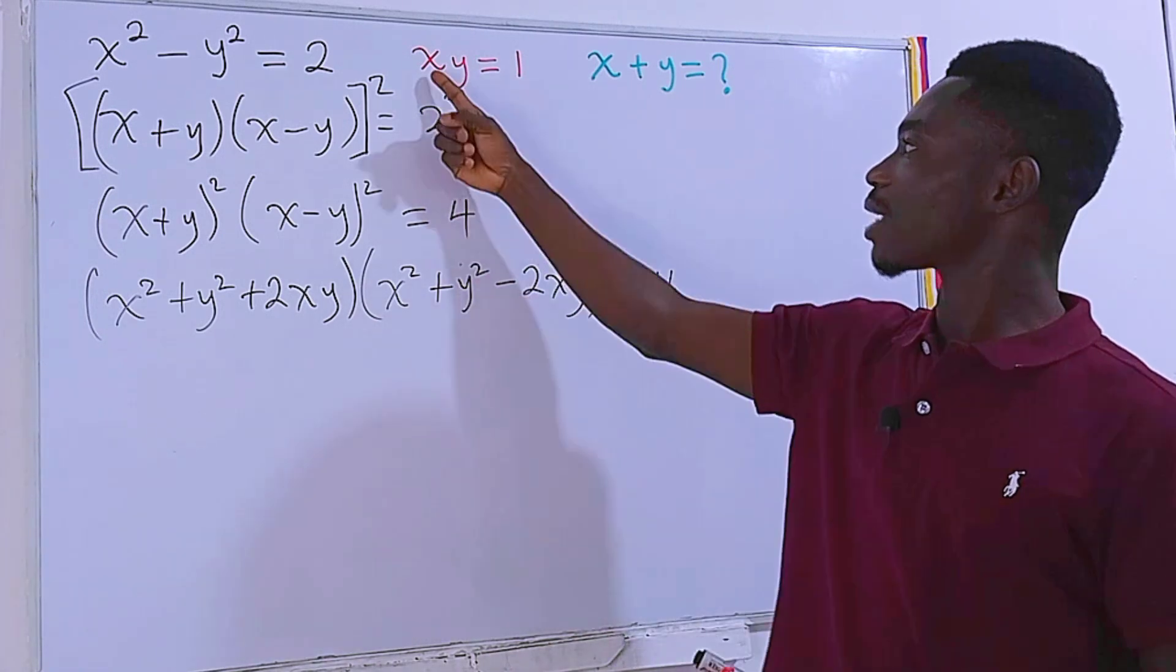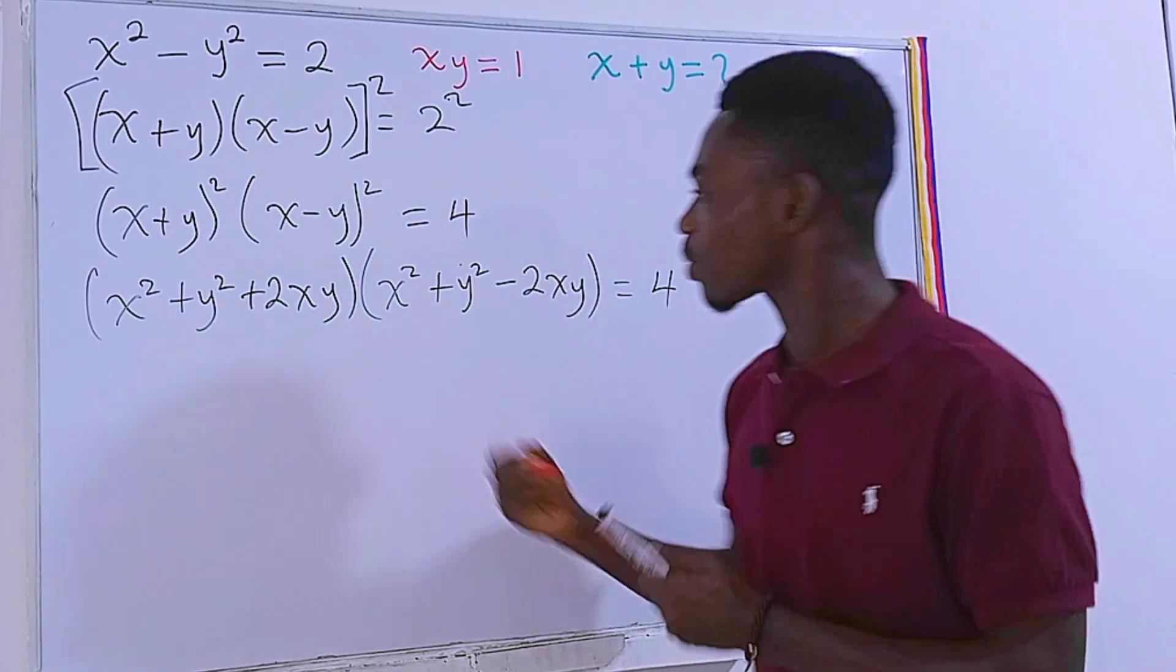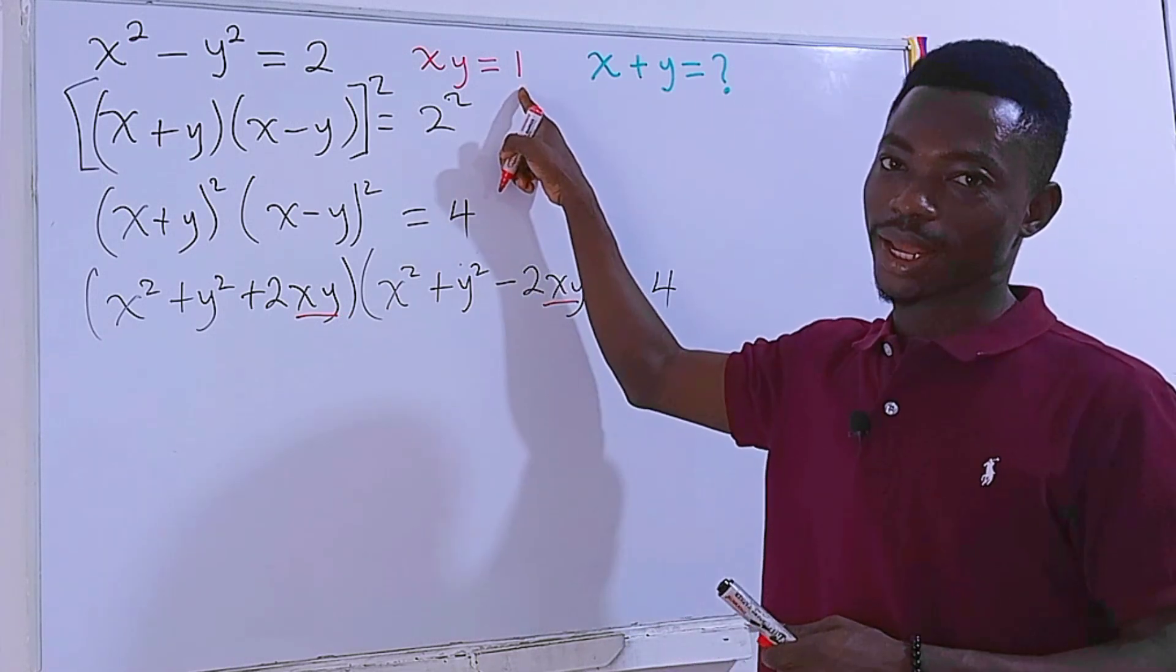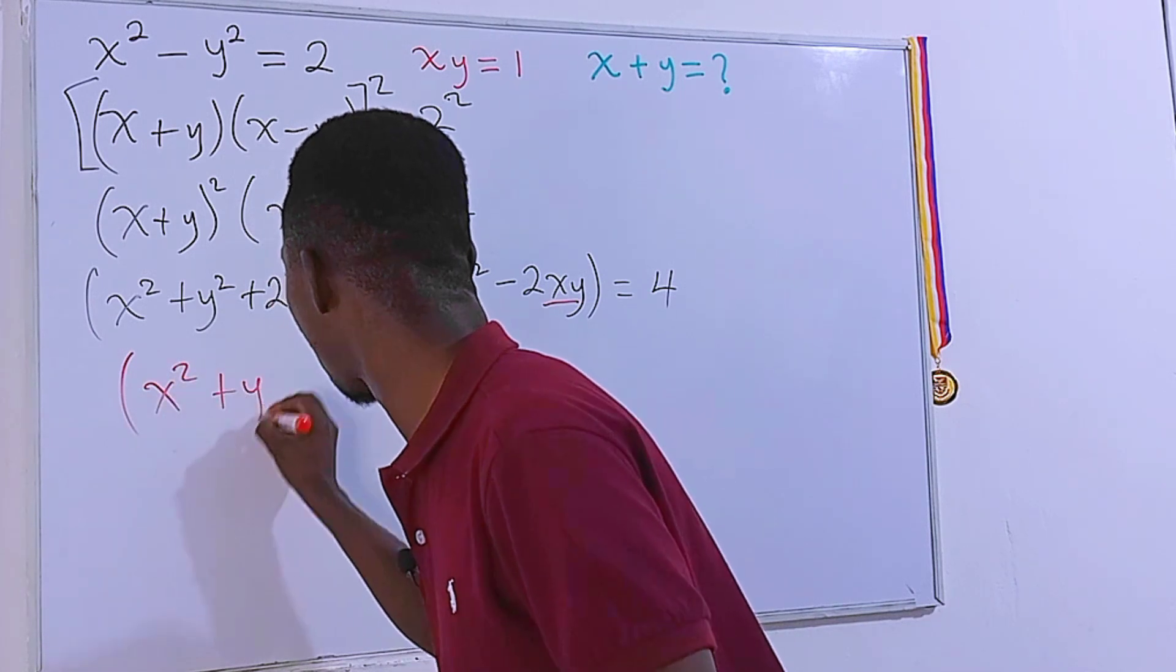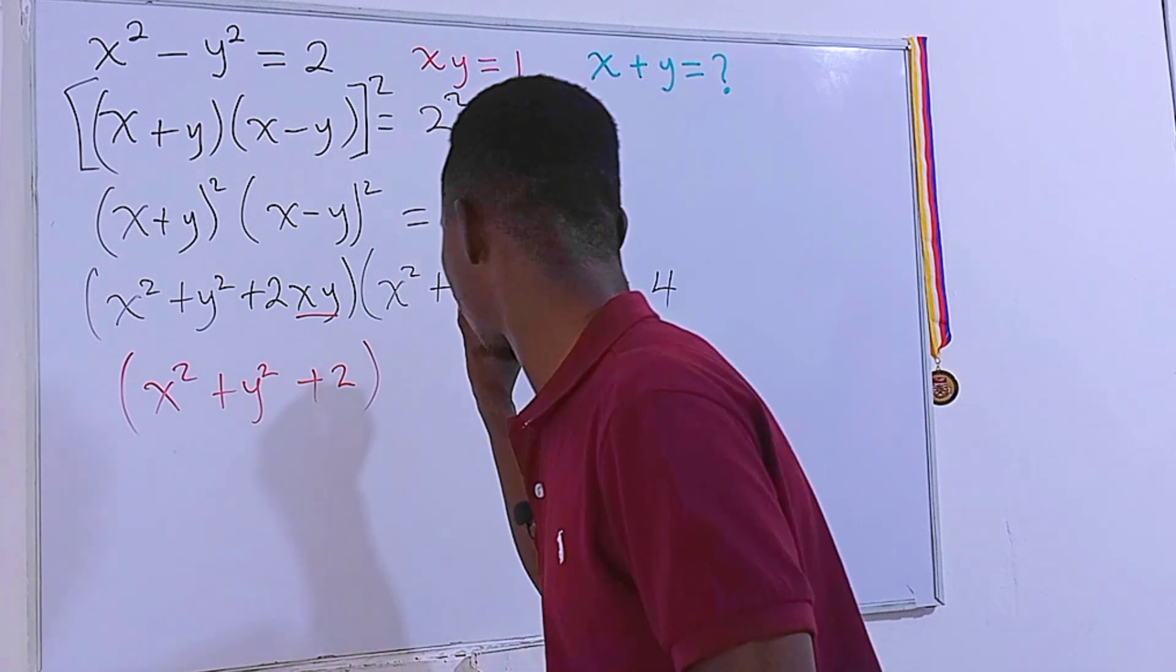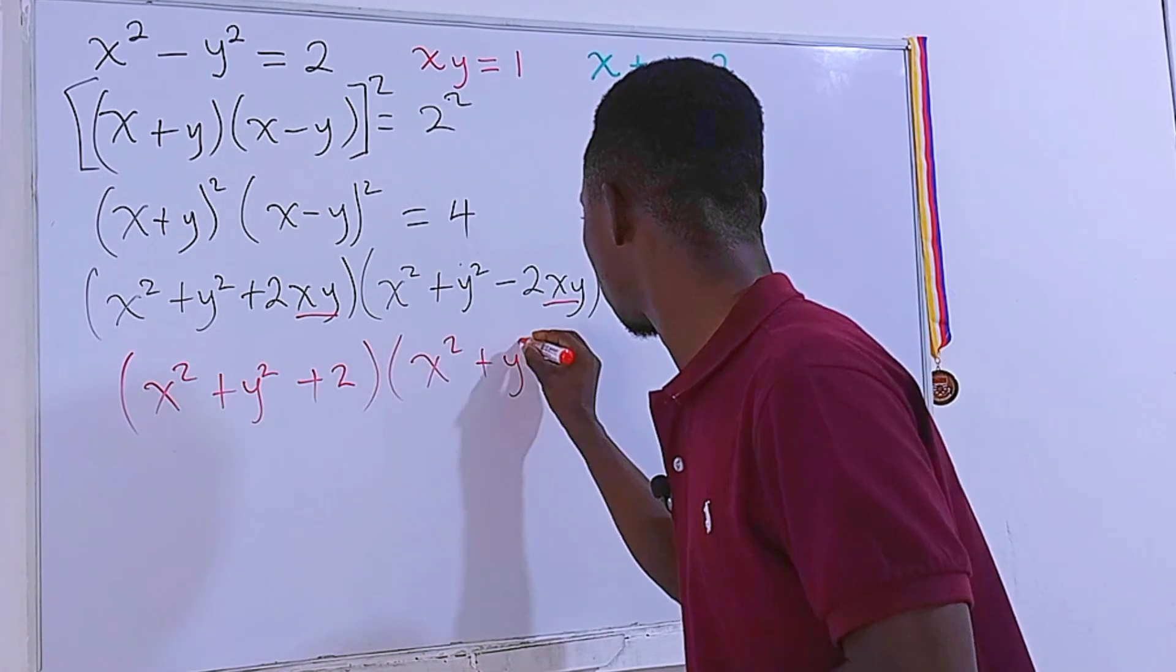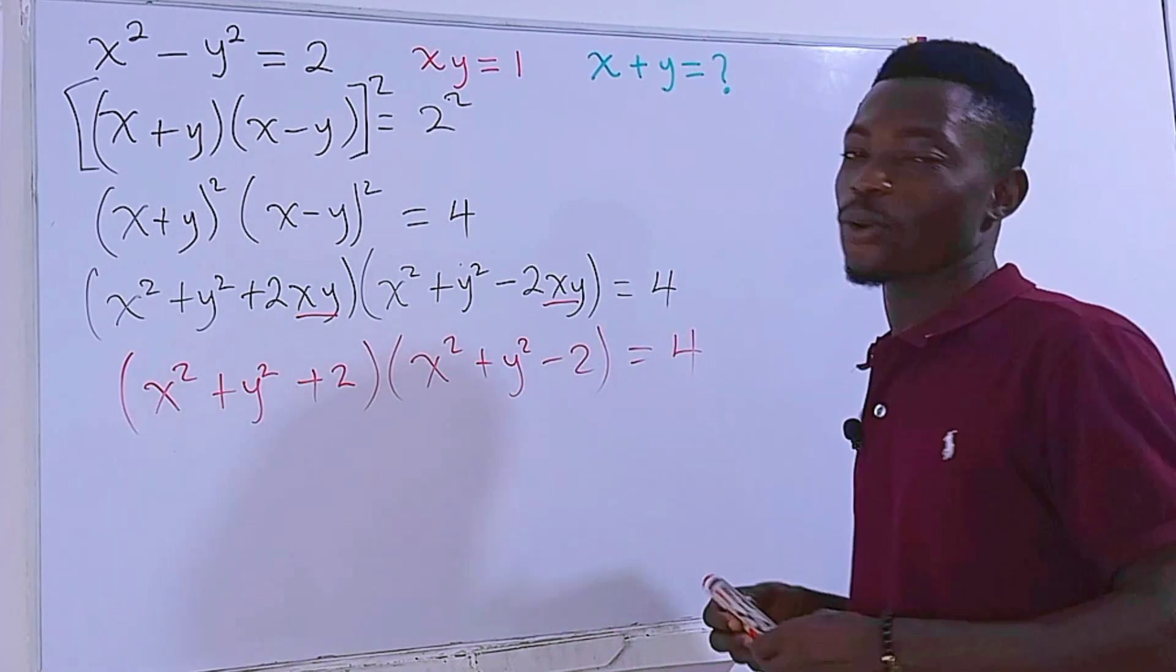Now, we know what xy is right from this equation. So in place of xy here, we can replace that with just 1. And if we do that, we'll have x squared plus y squared plus 2, times x squared plus y squared minus 2, just like that. And this is equal to 4. Easy.